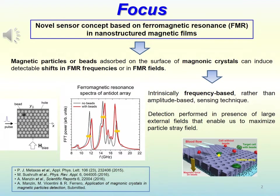The aim is the study of a novel sensor concept that exploits ferromagnetic resonance phenomena in nanostructured magnetic films, like antidot arrays. The sensing mechanism is based on the generation of detectable shifts in the ferromagnetic resonance frequencies or in the ferromagnetic resonance fields of the high-frequency spectra of the nanostructured films. These are caused by the interaction between the stray fields produced by the magnetic particles and the magnetization configuration in the films themselves.